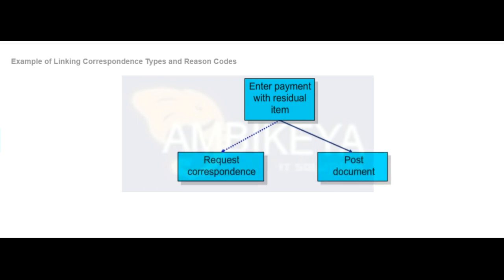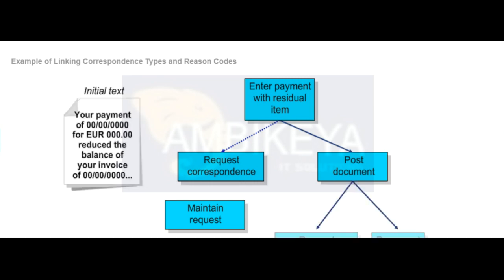After your correspondence request is created, you post the document. Next, you maintain your correspondence request — that is, you print the correspondence request and the system generates the letter using your customer's master data and line item information.